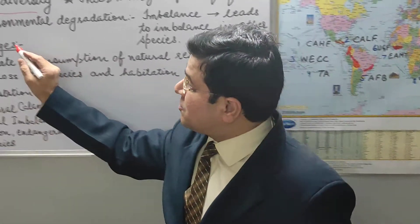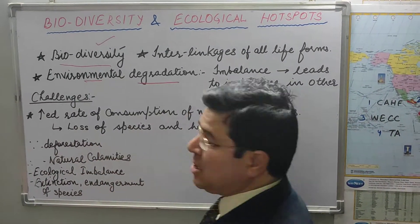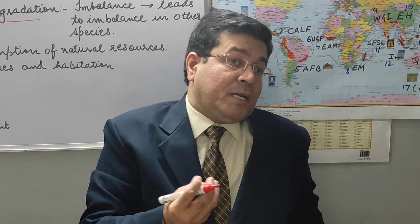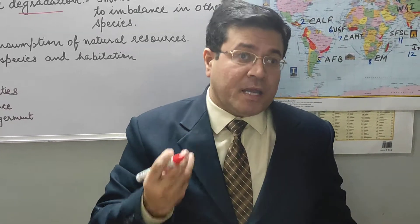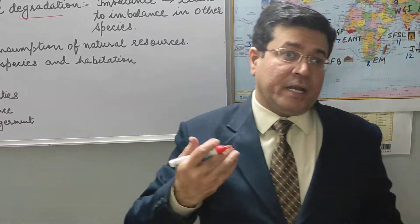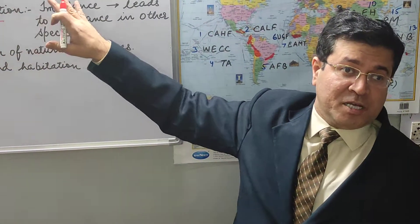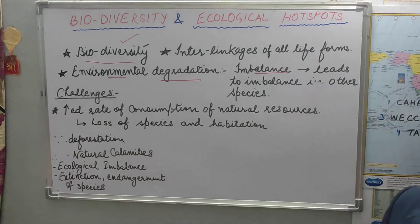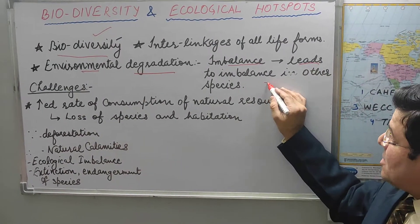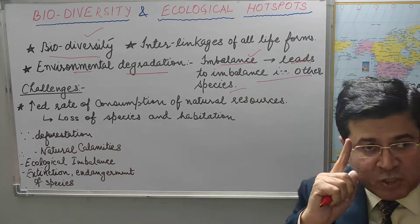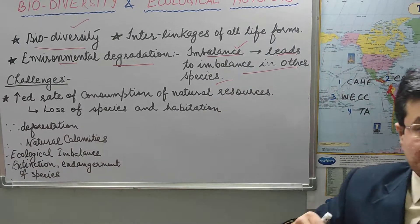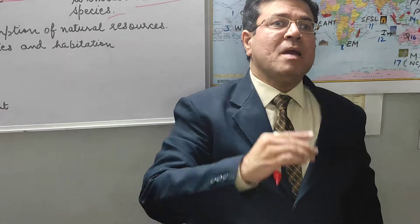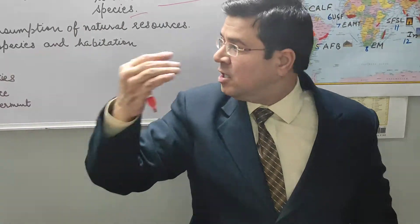Nowadays we are observing the problem of environmental degradation — contamination of important elements in our environment: air, water. Forests are degrading and we are losing plant species, animal species, and bird species. The imbalance we are creating leads to imbalance in many other species. If imbalance in one species is there, it leads to imbalance in many others. That is why we always say: if one food chain is disturbed, then many food chains or food webs are going to be disturbed.